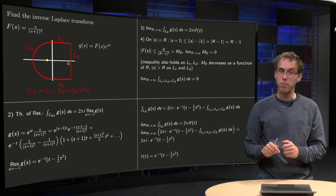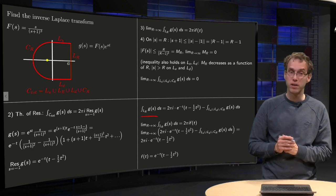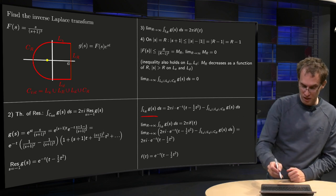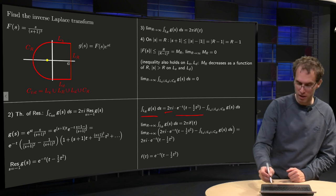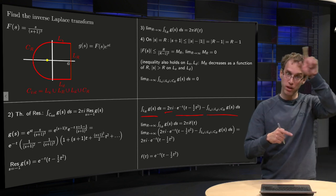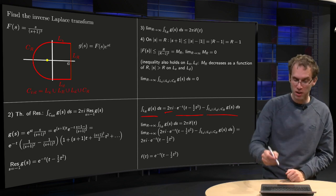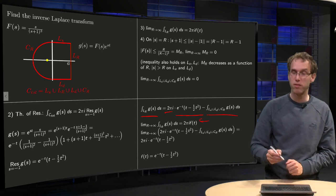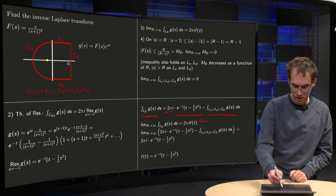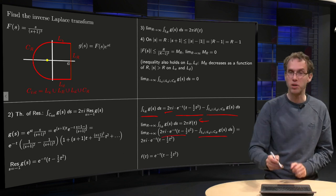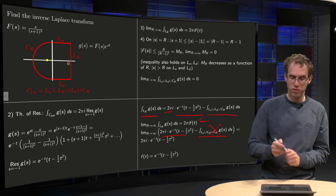Then you can wrap up everything. Integral along LR of G of S dS equals 2πi times the residue minus the contributions on L up and L down and CR, and you take the limit R to infinity on the left and right. On the left hand side you get 2πi times F of T, and on the right hand side the limit exists, because this limit exists and that one exists, so you can use a sum rule.